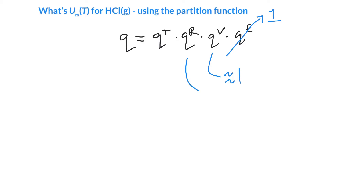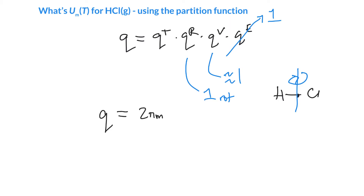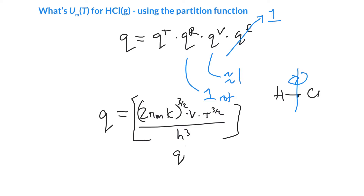We've got the translations as before, but this time we have a rotation to deal with. For a diatomic molecule, the center of mass is close to the chlorine, and we have rotation about that axis. The partition function equals the translational part — (2π m k_B)^(3/2) V T^(3/2) / h³ — where I've taken T out of the parentheses to make differentiation easier.